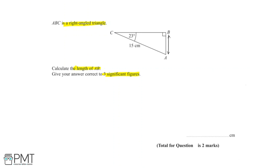We're given the angle ACB, which is 23 degrees. Given that angle, let's identify the opposite side, the adjacent side, and the hypotenuse. The hypotenuse is always the side opposite the right angle, which is the 15cm line over here. Line AC is the hypotenuse, which we'll label as H.